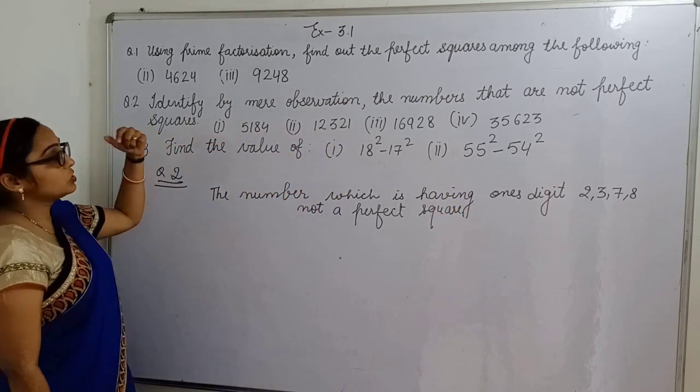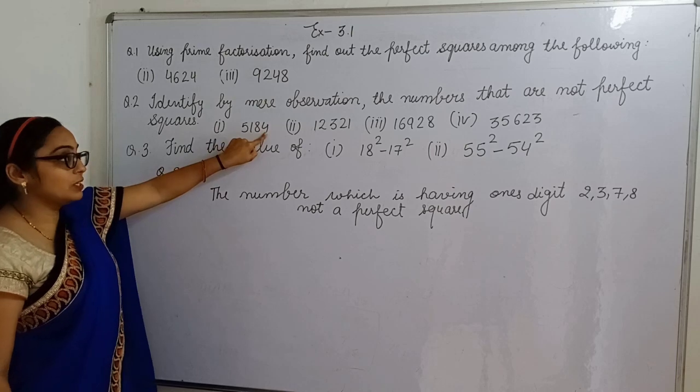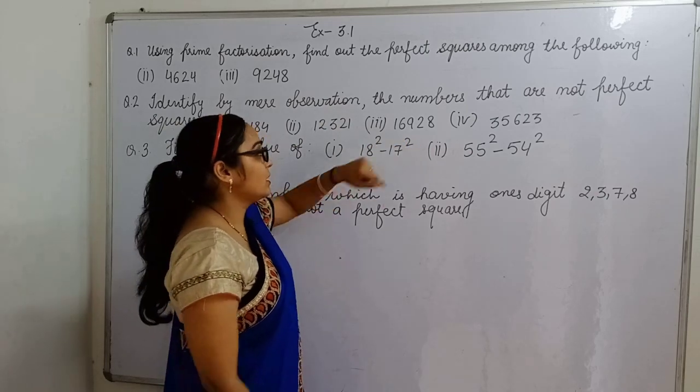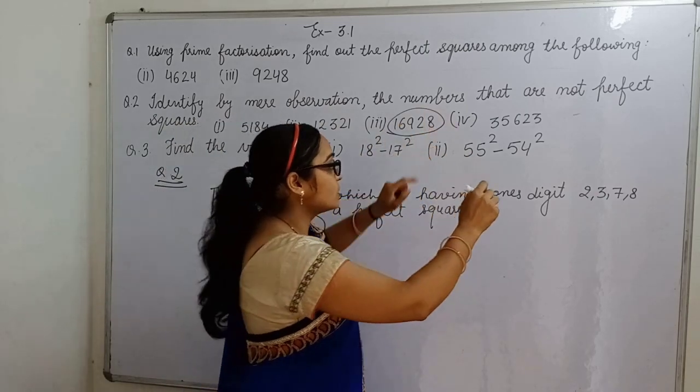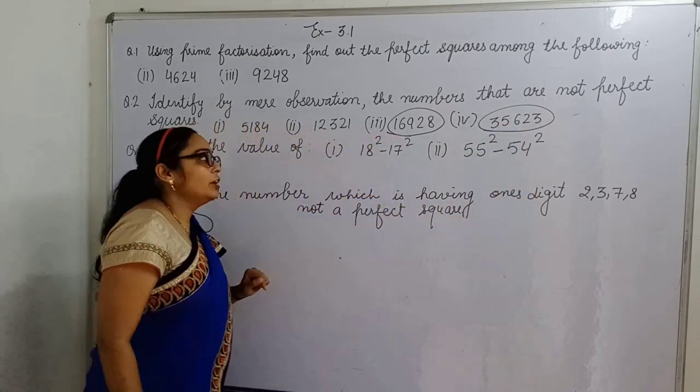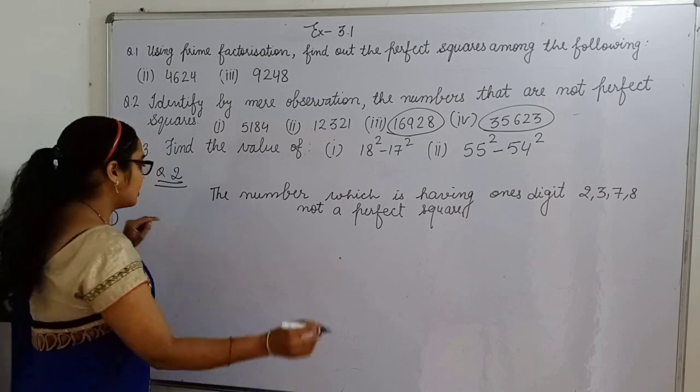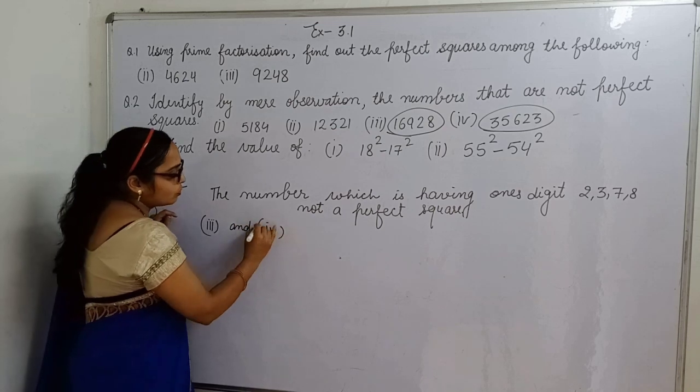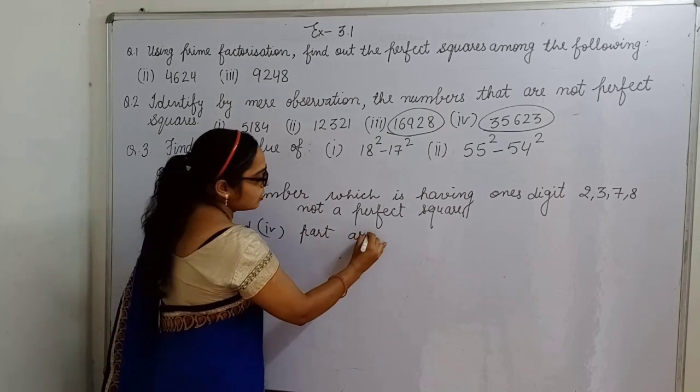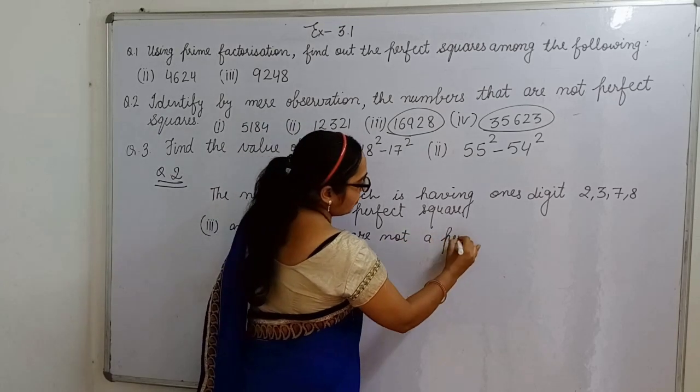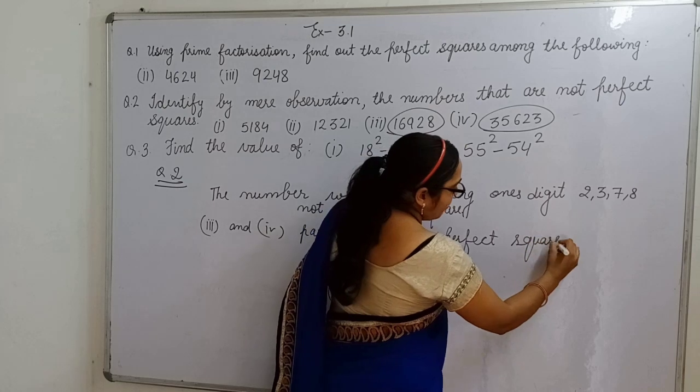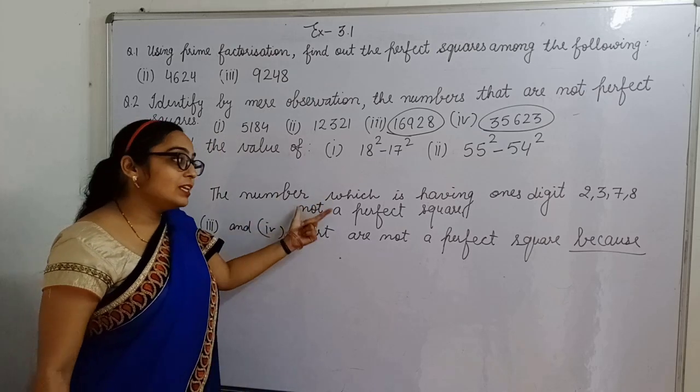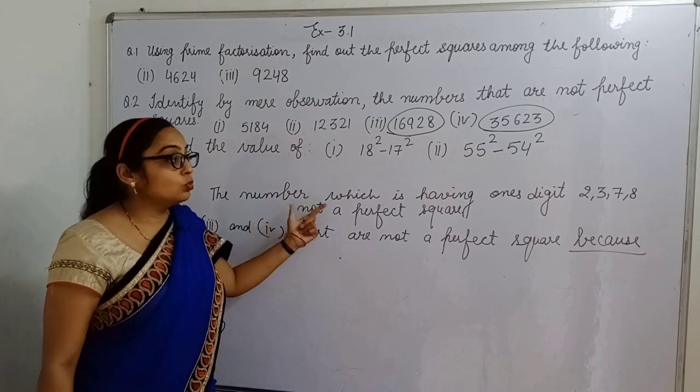So by mere observation, check now. 4, it means it is may or may not. 1, it is also. You can see 2, 3, 7, 8 here. 8, it means 3rd and 4th part are not perfect square. Aap yahaan directly likh sakte ho, 3rd and 4th part are not a perfect square.